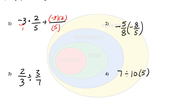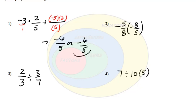We're just left with multiplying. The top becomes negative 6, the bottom is 5, or we could write the negative in front as negative 6 fifths.